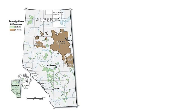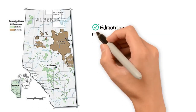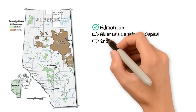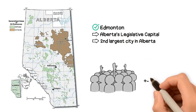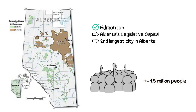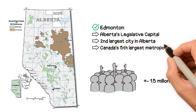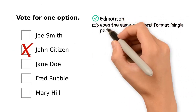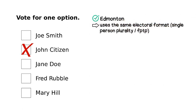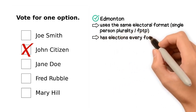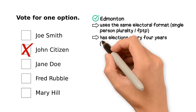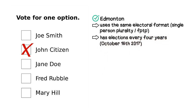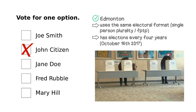Edmonton is Alberta's legislative capital and second largest city in Alberta, with a population of almost 1.5 million people as of 2021. It is also Canada's fifth largest metropolitan area. Edmonton also uses the same electoral format — single-person plurality, or first-past-the-post — as federal and provincial elections do. Edmonton has elections every four years, with the last election happening on October 16, 2017, whereby Mayor Don Iveson won the election.